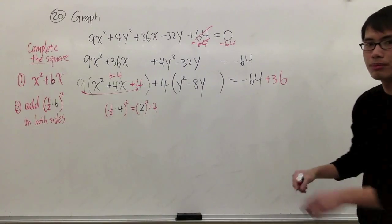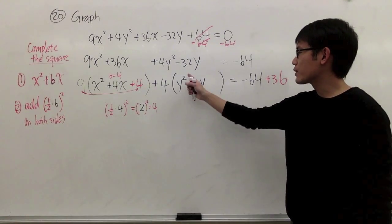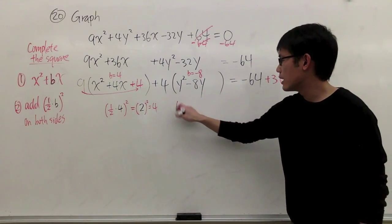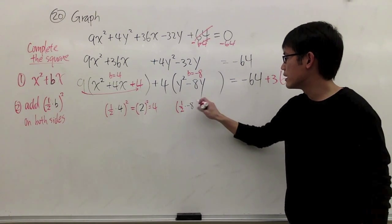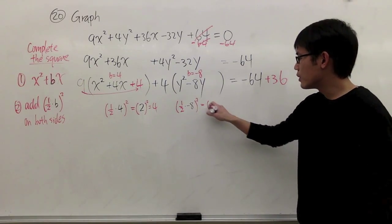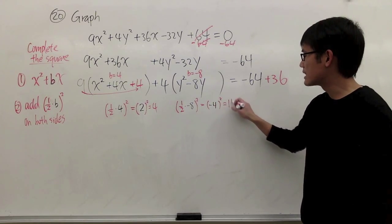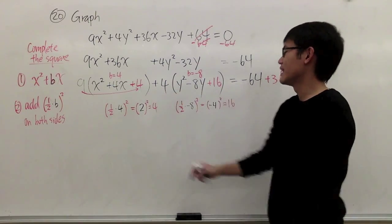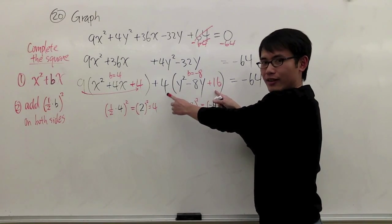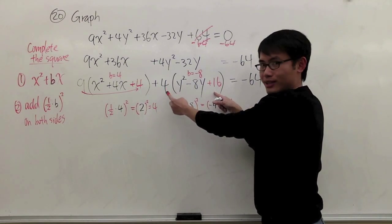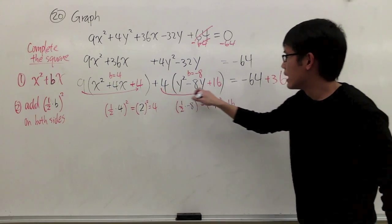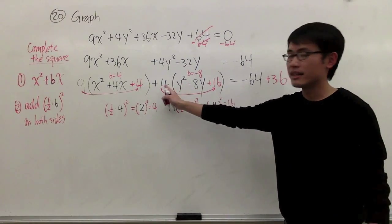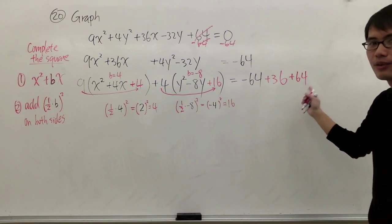For the y terms, we have y squared minus 8y, so b is negative 8. The number we need to add is one-half times negative 8, squared — that is negative 4 squared, which equals positive 16. So we add 16 inside the y parentheses. We also have a positive 4 on the outside, so 4 times 16 equals positive 64, and that is the number we add on the right-hand side as well.